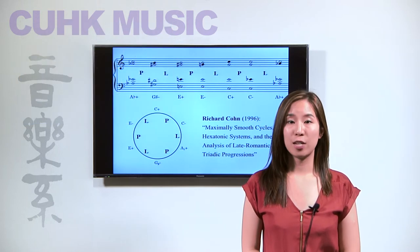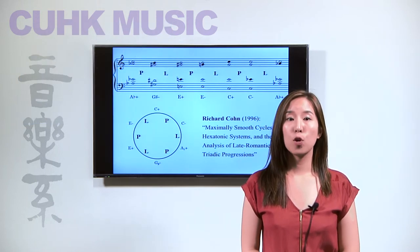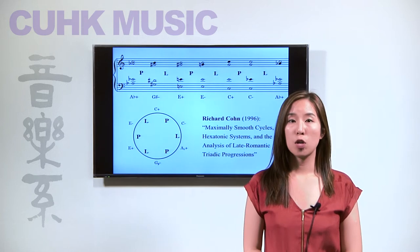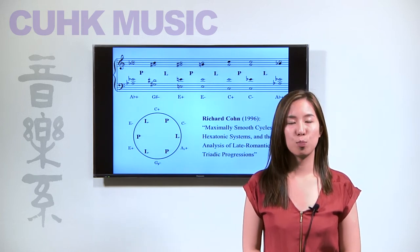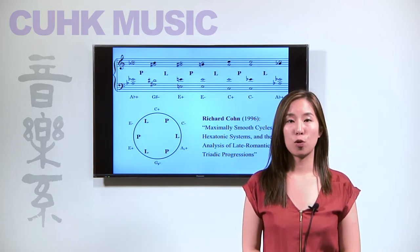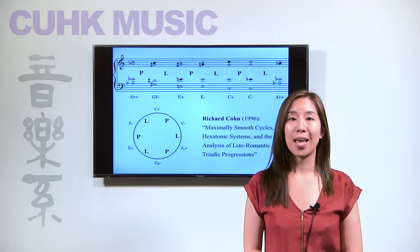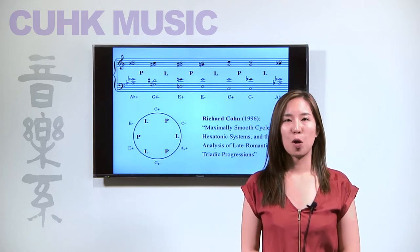Richard Cohn draws attention to the fact that a similar harmonic progression is heard in the second half of the first movement of Brahms' Concerto for Violin and Cello in A minor, Op. 102.